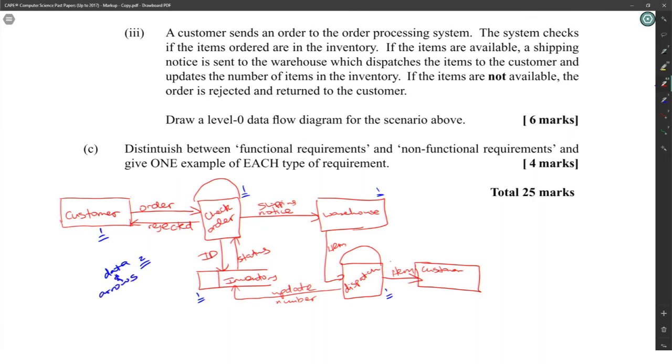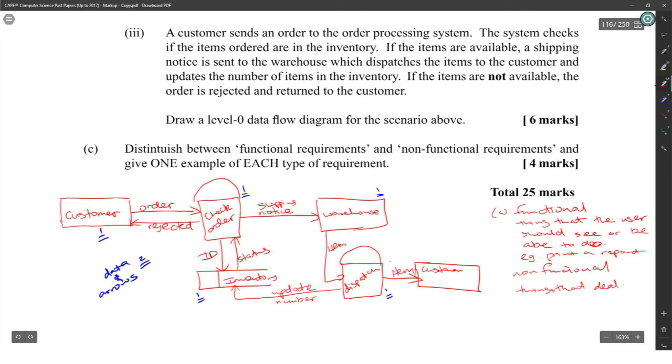Distinguish between functional requirements and non-functional requirements and give one example of each. Functional: things that the user should see or be able to do, example: print reports. Non-functional: things that deal with the way the program works, example: fast user interface. Something like that. That was really easy.